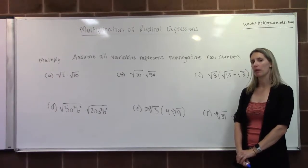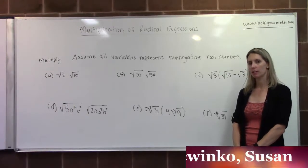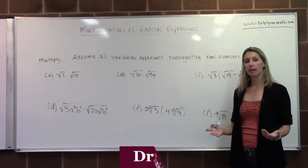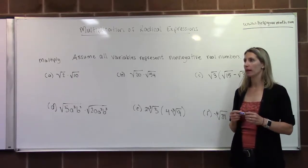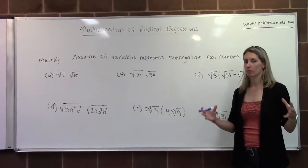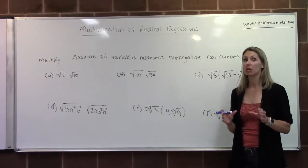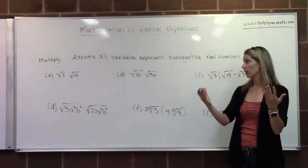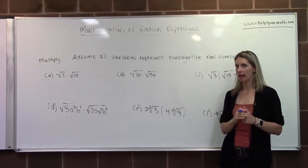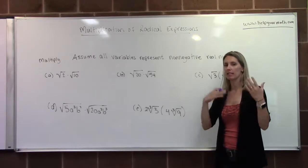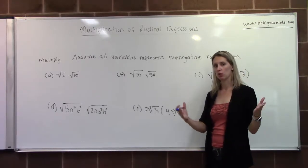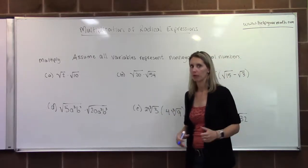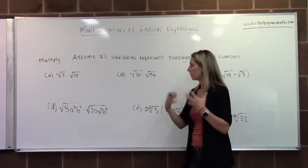In this video, we're going to look at multiplying radical expressions. We're going to look at a few different types of examples. One thing I like to keep in mind when multiplying radical expressions: I don't necessarily want to multiply the numbers together because I might end up with some really big numbers. Generally, I try to think if the radicands have any common factors, and if so, do they have enough to make a perfect power expression.